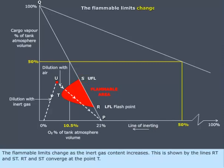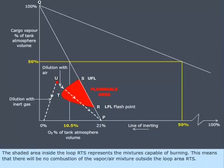The flammable limits change as the inert gas content increases. This is shown by the lines RT and ST, which converge at the point T.